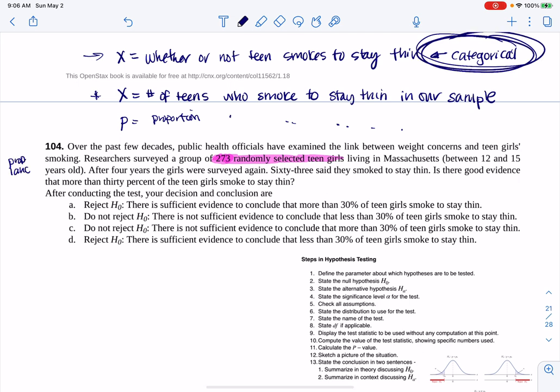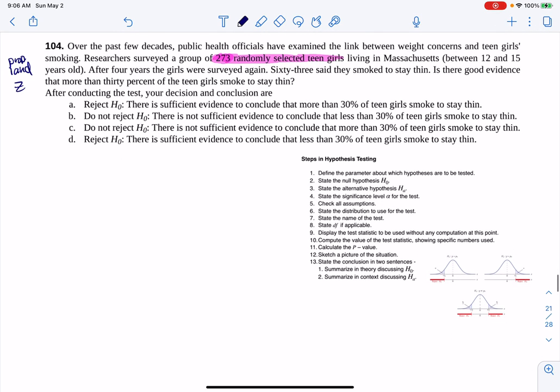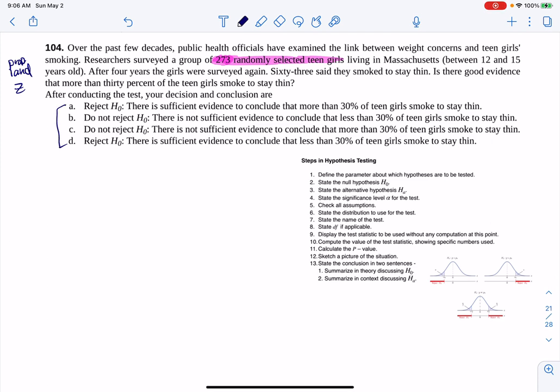Because I have this categorical variable, I am in prop land and I'm going to run a Z hypothesis test. Once I run that test, I'll be able to figure out which of these options I want, A, B, C, or D. This is a multiple choice question, but ultimately it deals with step 13, what is your conclusion. For my first step, I need to define a parameter. We're in proportion land, so I'm going to define P to be the true proportion of girls between the ages of 12 and 15 who smoke to stay thin.